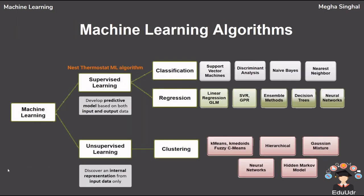Machine learning is of three types: supervised learning, unsupervised learning, and reinforcement learning. Inside supervised learning we have classification and regression techniques, and in unsupervised learning we have clustering techniques. All about these techniques we are going to study in our upcoming lectures.